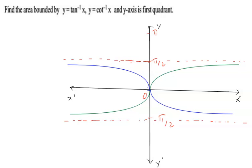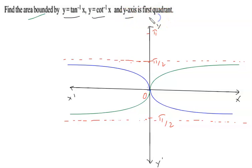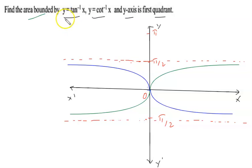Hello everyone, welcome to Vedantu. Today I am going to discuss a very important question. We have to find out the area bounded by y = tan⁻¹x, y = cot⁻¹x, and the y-axis in the first quadrant. First of all, I am going to plot the graph of y = tan⁻¹x and y = cot⁻¹x, so that we are able to find out the bounded area.